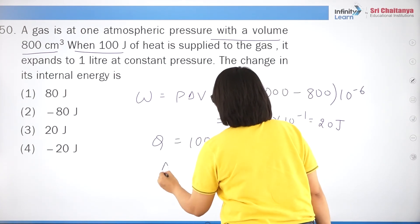Question 26: the zeroth law of thermodynamics represents both the concept of temperature and the state of thermal equilibrium of a system. The third statement (heat is a form of energy) belongs to the first law. Correct answer is option 1: both A and B are correct.